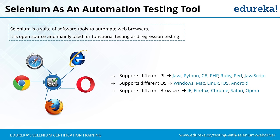Selenium as an automation testing tool. There are many tools in the market, but Selenium is taking over all of them. Selenium is a suite of software tools to automate web browsers. It is open source and mainly used for functional testing and automation testing. It includes Selenium WebDriver, Selenium IDE, Selenium Grid, and Selenium Remote Control — though RC is now deprecated. These four components help us automate web browsers and web applications.